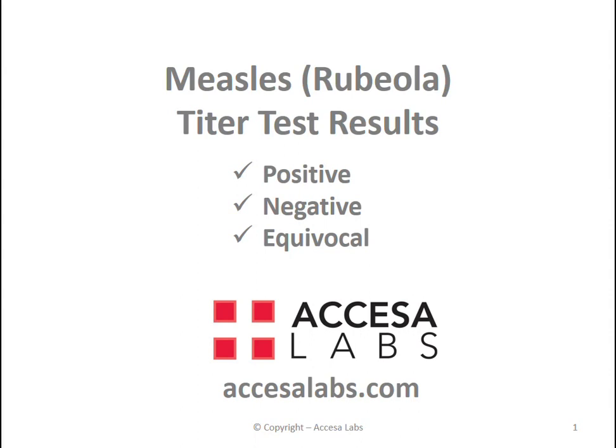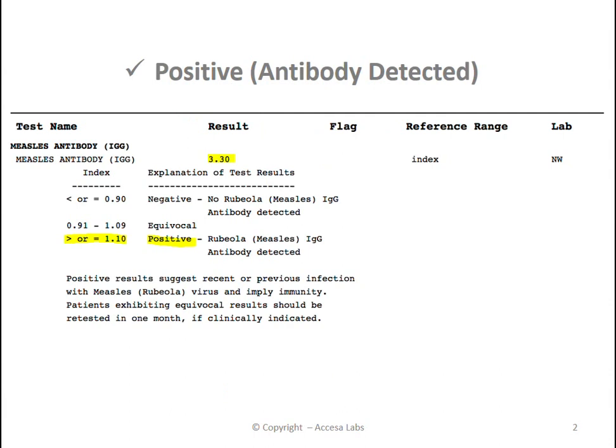Most schools and workplaces want to see a quantitative or numerical result, which can be found under the result header on the sample report. You can find the numerical result here. This sample report has a result of 3.30.